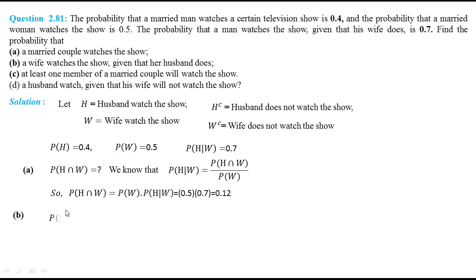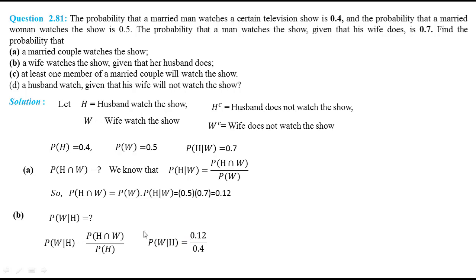Part B: the probability that a wife watches the show given that her husband does. Probability of W given H equals probability of H intersection W divided by probability of H, using the conditional probability formula. Substituting the result of probability of H intersection W calculated in part A and the probability of H given in the problem, we have probability of W given H equal to 0.3.